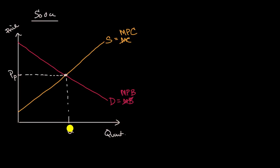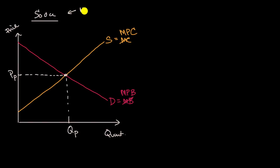This is the equilibrium quantity if we just factored in the private costs and benefits. So how do we factor in the social benefits or costs? Well, for something like soda, you could have some negative social costs, and when you have negative social costs, you would call that a negative externality. So there are some negative externalities when you are thinking about soda.